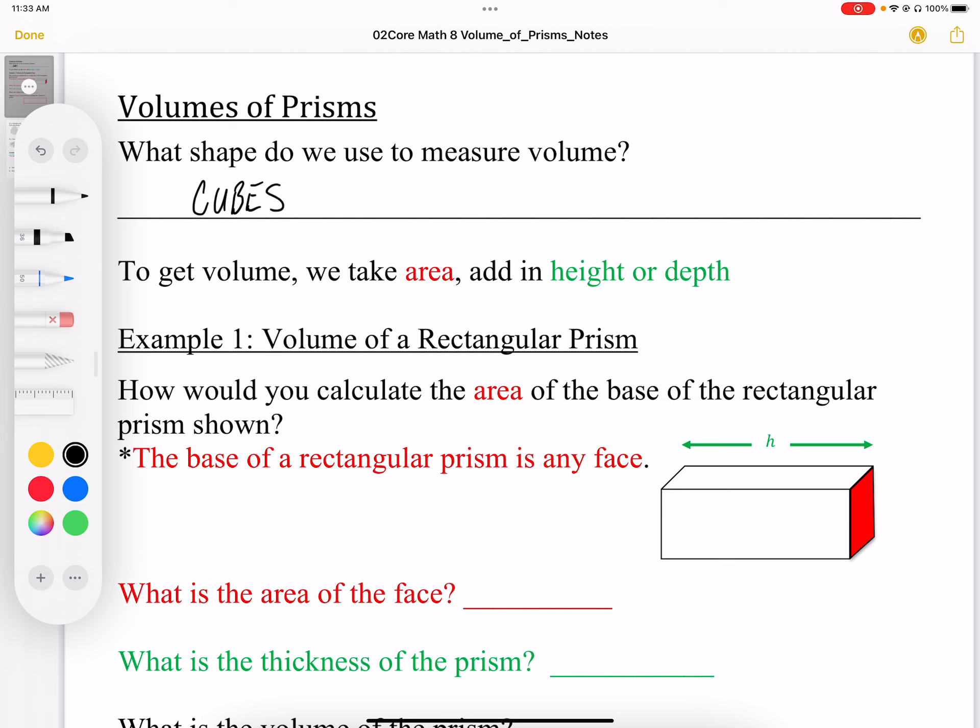And in order to get cubes, what we do is we take an area. So in the diagram below, we have this rectangular area down here. We're going to take that area and we're going to give it some depth or height.